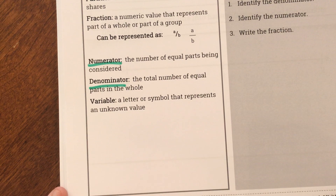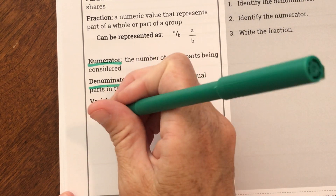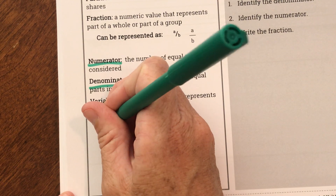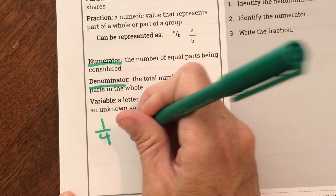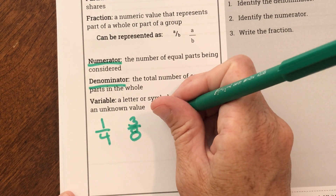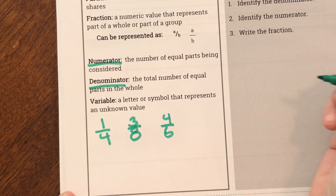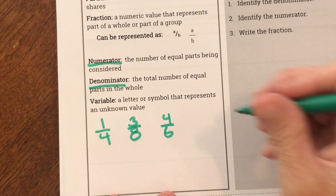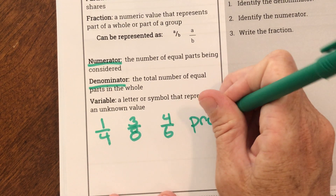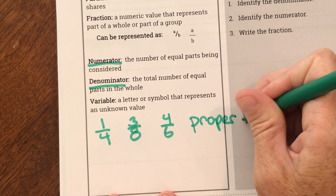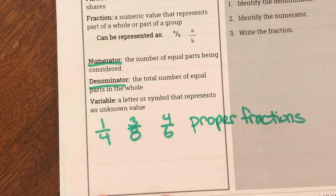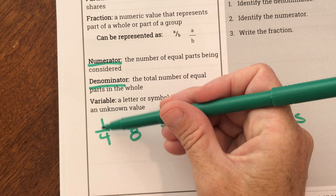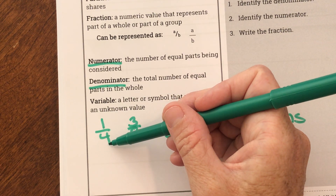We've been seeing fractions so far, and most of our fractions look like this. Some examples: one-fourth, three-eighths, four-sixths. These are something we call proper fractions. We call them proper fractions when the numerator is smaller than the denominator.